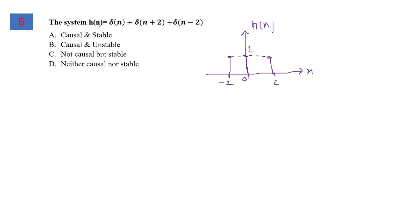For question number 6, the impulse response is given as δ(n) + δ(n+2) + δ(n-2). We need to comment on causality and stability. If h(n) equals 0 for n less than 0, the system is causal. This is not the case here. However, the system has impulse response existing at only three time instances, so it's stable. The system is non-causal but stable.